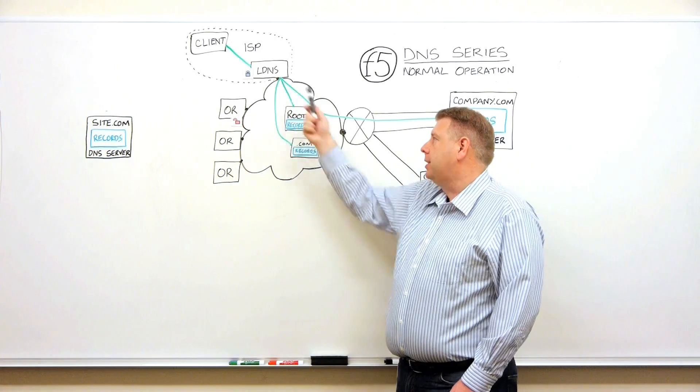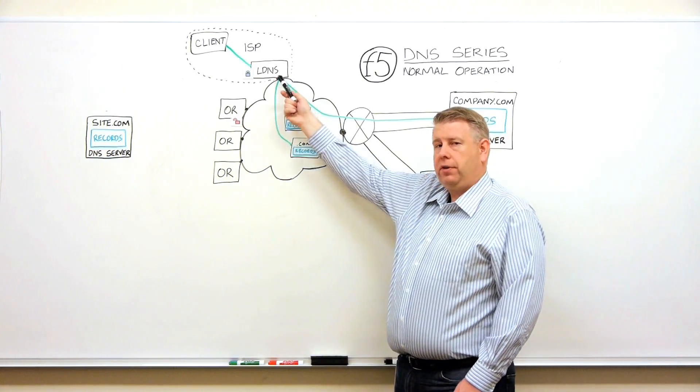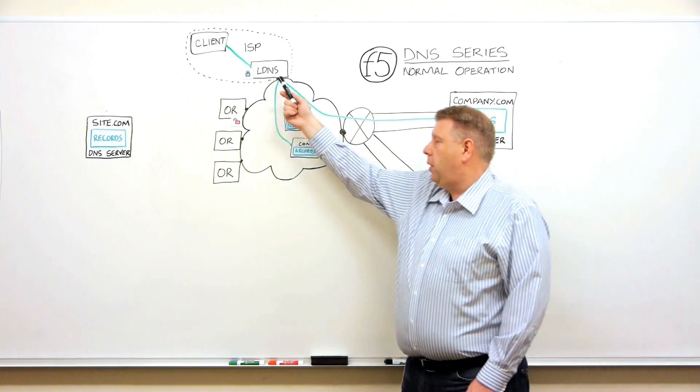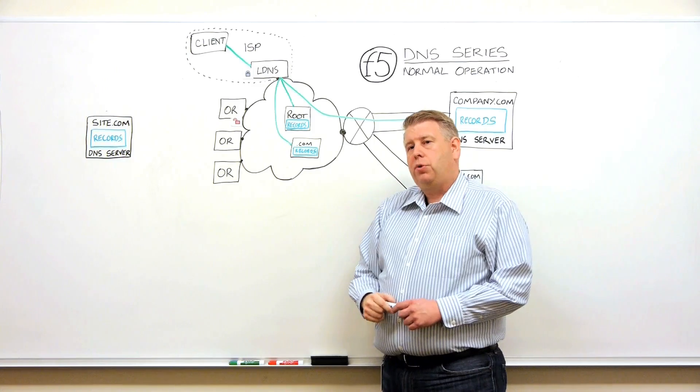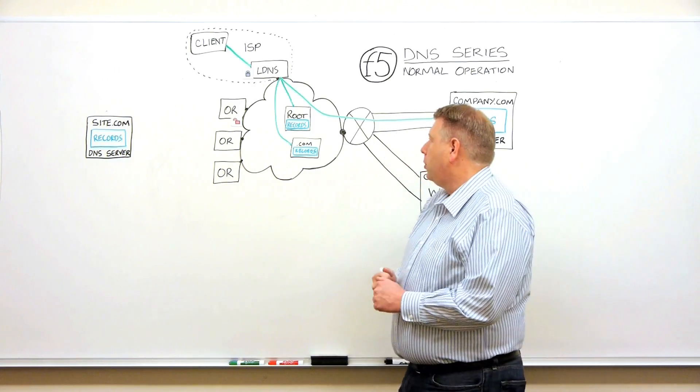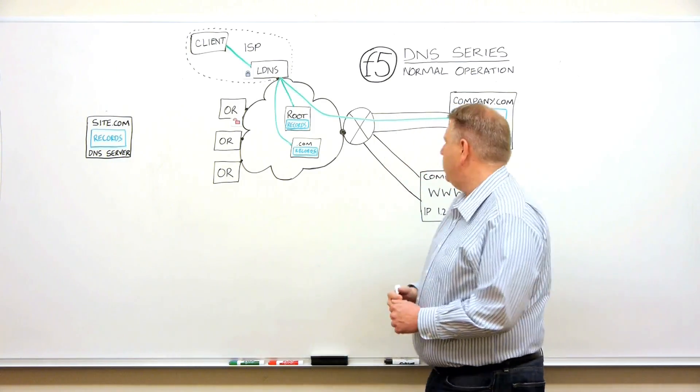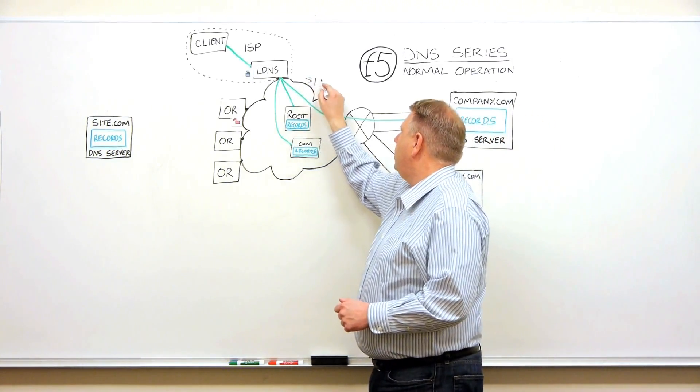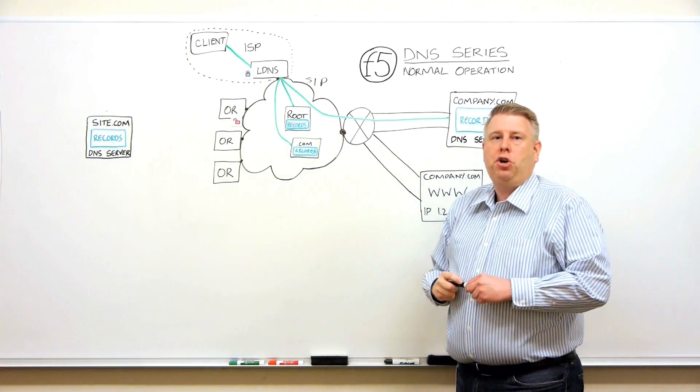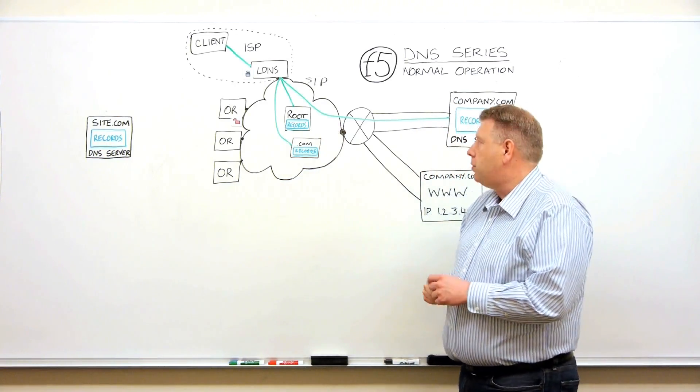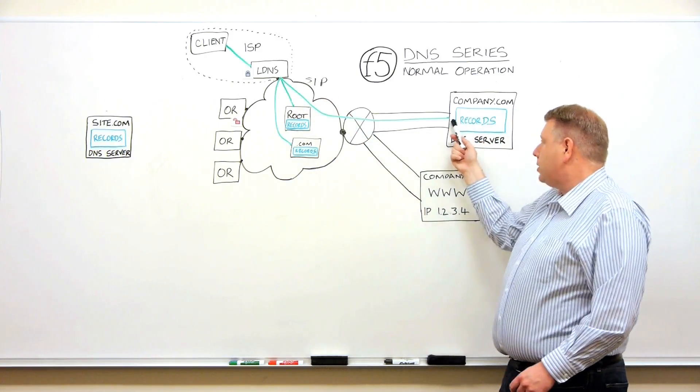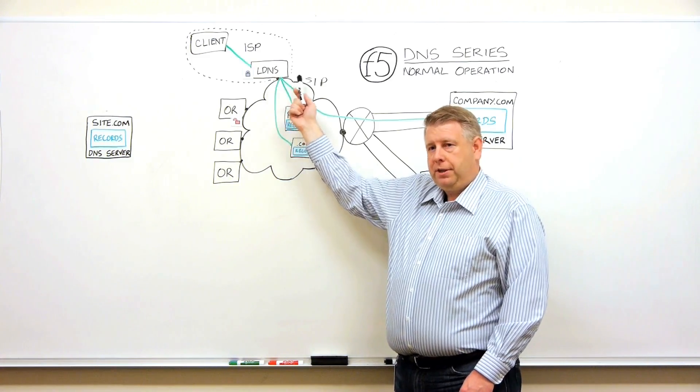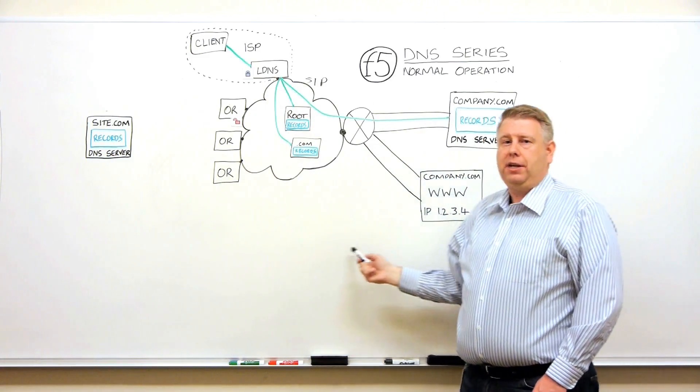One of the questions you might ask is how does the local DNS server indicate to the DNS server it's talking to how to get the response back to it. And that's something we call a source IP address. So when a local DNS server sends the information to the DNS server, it includes something called a source IP. And that source IP, think of it as a return address. And the return address allows the DNS server to send back the answer to the local DNS server. That's in essence how the normal operation of DNS works.